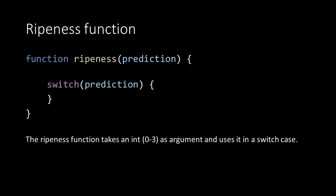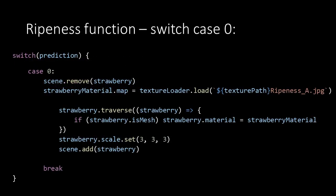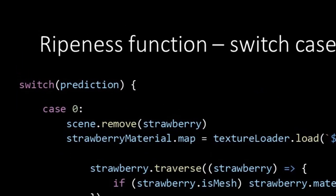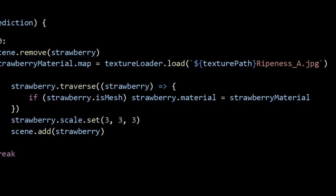The ripeness function takes in the prediction which is an integer between 0 and 4. The function is built up on a switch case which uses the prediction. The first case is when the prediction is 0. First the strawberry model is removed from the scene. Then the strawberryMaterial's map is set to the ripeness image A using the textureLoader and the load method, just like in the earth model example.